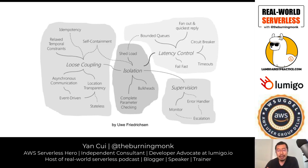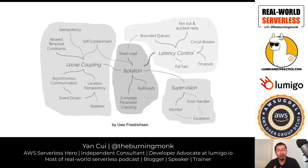Then there's isolation in terms of bulkheads. You can think about account-level isolation — running different applications or services on separate AWS accounts — which gives you built-in isolation for security breaches and service limits. But even at a lower level, if you're running a Java application, you can apply bulkhead ideas to limit certain threads within the thread pool so one process can't consume all available threads and cause downtime.